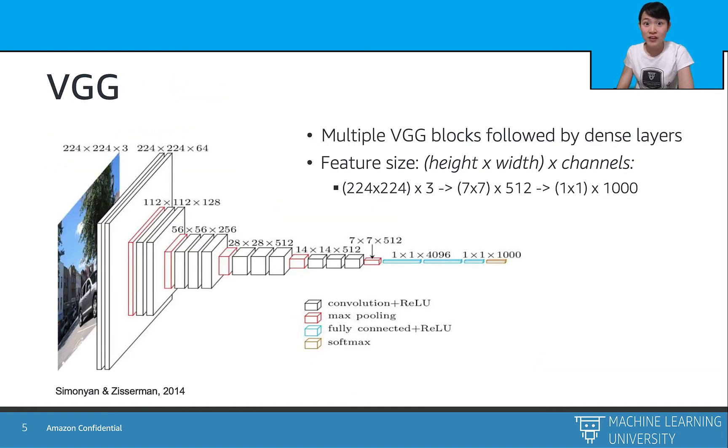So the full name of VGG is very deep convolutional neural network. However, people now usually call it VGG because it is short for the VGG geometric group from University of Oxford, where this paper is coming from.